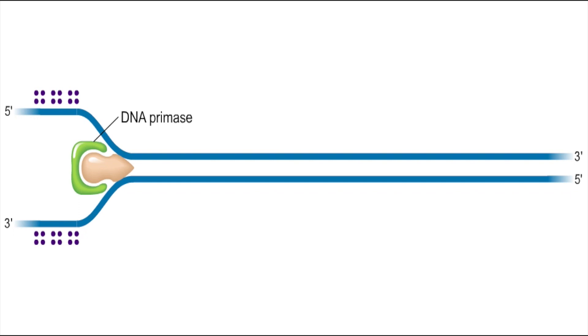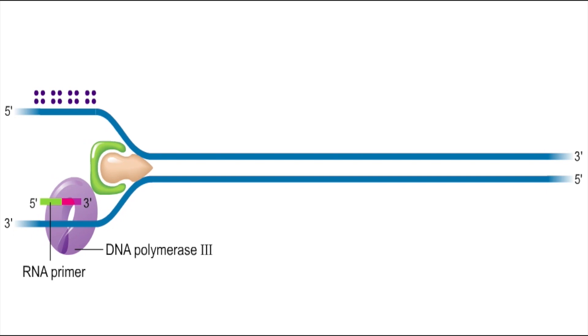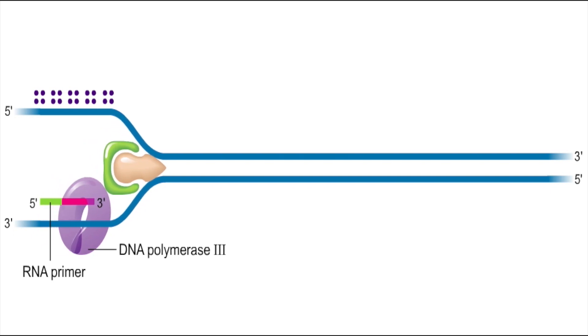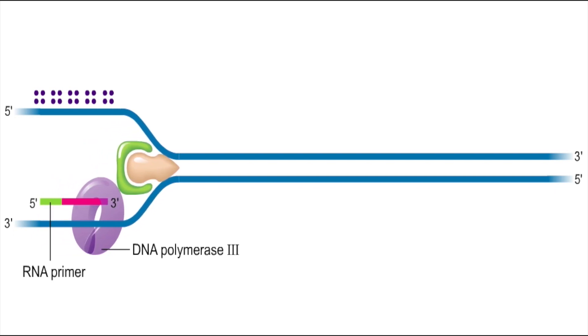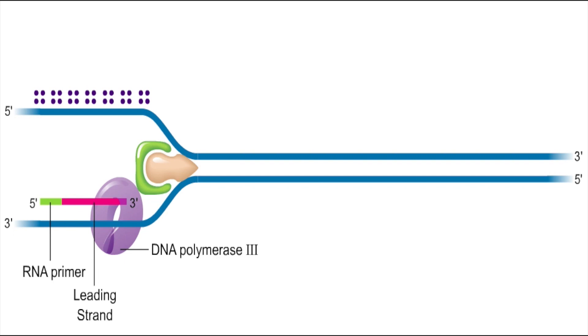First, DNA primase synthesizes a short RNA primer in the five-prime to three-prime direction. Next, DNA polymerase III adds DNA nucleotides to the RNA primer in the five-prime to three-prime direction. This new DNA is called the leading strand because it is being made in the same direction as the movement of the replication fork.